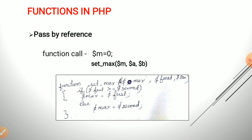The second method is pass by reference, which provides two-way communication. Here, the address of the actual parameters is passed rather than their value. If the formal parameters change, that change is reflected in the actual parameter as well. In PHP, there are two ways to specify pass by reference: add an ampersand symbol to the beginning of the formal parameters, or add it to the beginning of the actual parameters. The commonly used method is adding the ampersand symbol to the formal parameters in the function definition.